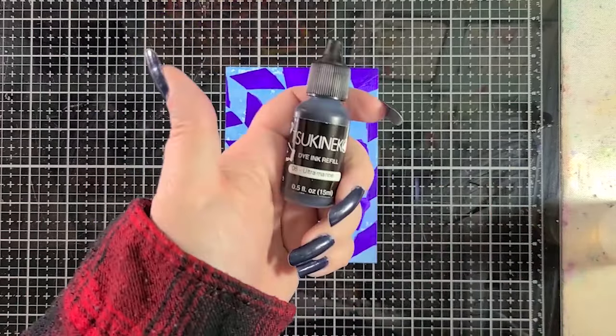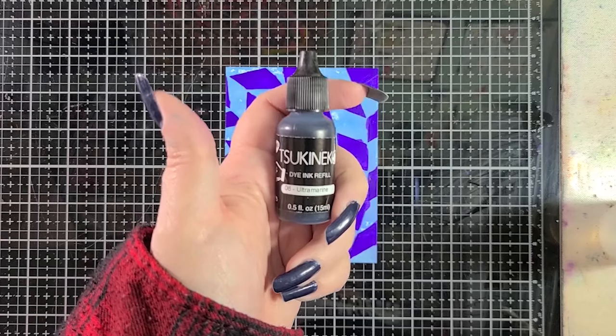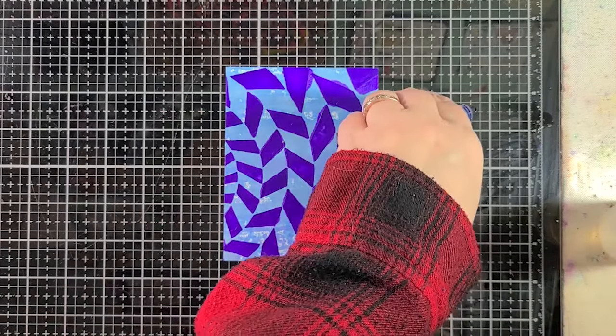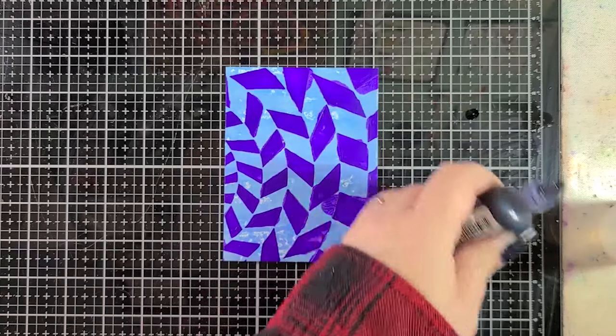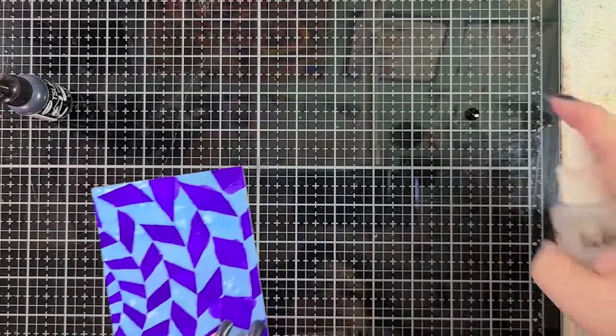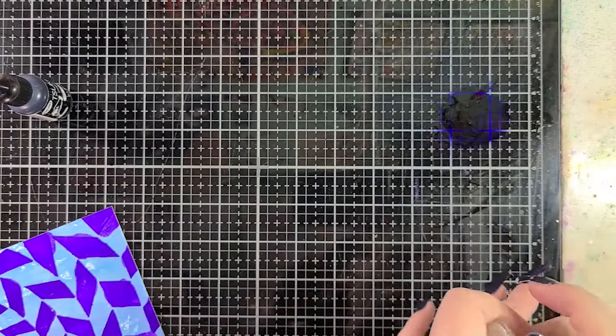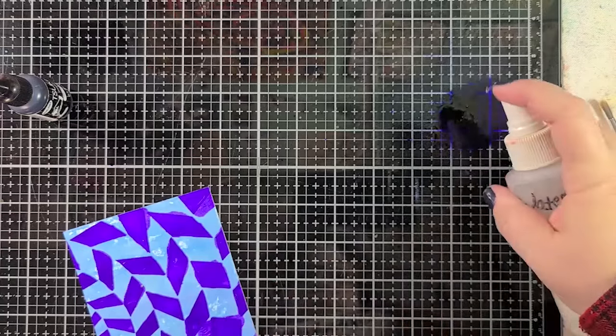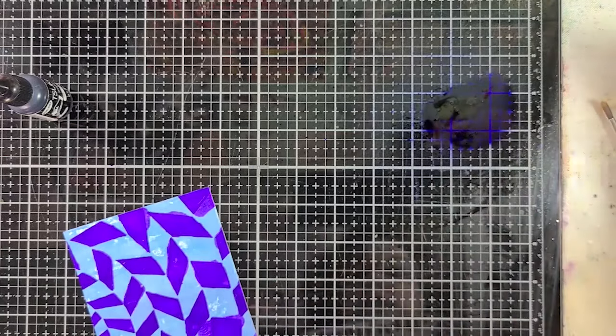So now I have the ultramarine ink refill and I'm going to apply some of this to my mat. Just a drop. Maybe that's two drops. I'm going to spray it with water. You can see that color kind of explode there. And now I'm going to take a brush. I think we need some more water. This way it can really get to moving.